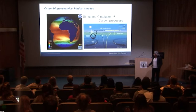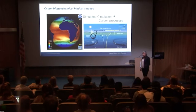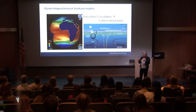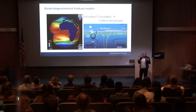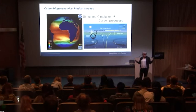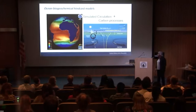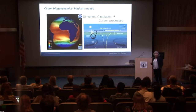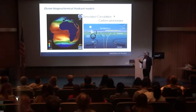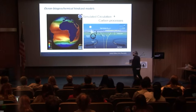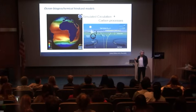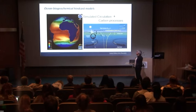Ocean biogeochemical models are three-dimensional models of ocean circulation and physics, forced by reanalysis meteorology, trying to represent what the real ocean did for the last 30–50 years. Into that physical model, we've coupled equations representing the biological pump and carbon chemistry. Until last year, these were the sole basis for global carbon budget estimates, typically using five to nine models updated annually to contribute to the global carbon budget.